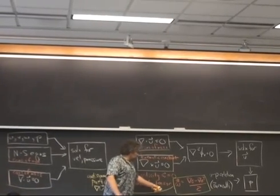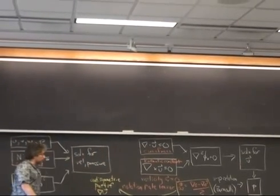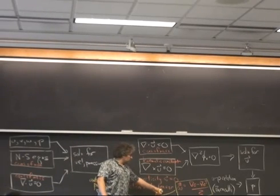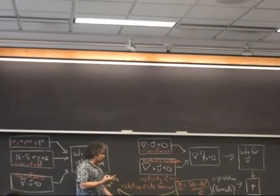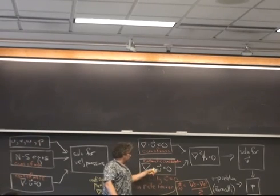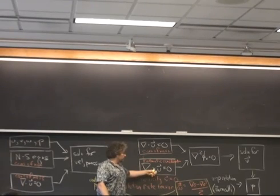This rotation rate tensor is now a true tensor, a second-order tensor. If I look at this tensor, it has nine components, but only three of them are unique. Those three components are actually directly related to this vorticity, which is equivalent to the curl of u.